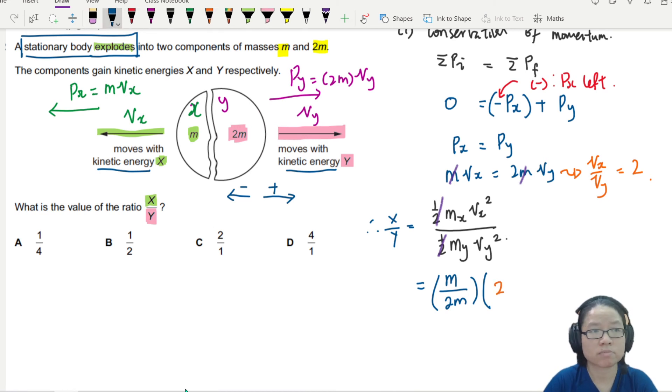Close bracket. Square. So the m and m again will go away. And then what you have left is 4 over 2. Because it's 2 squared over 2. And this is equivalent to 2 over 1. So the answer here is C.